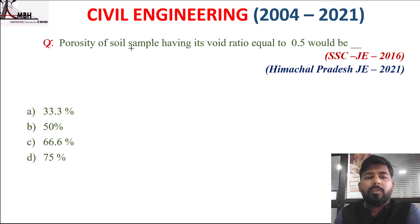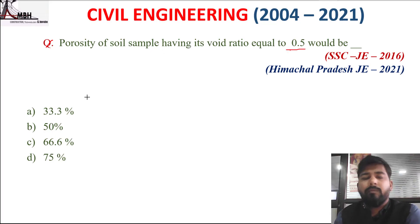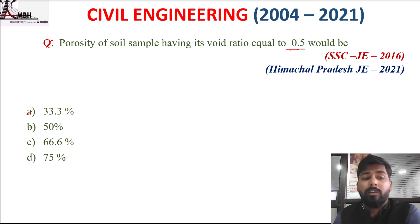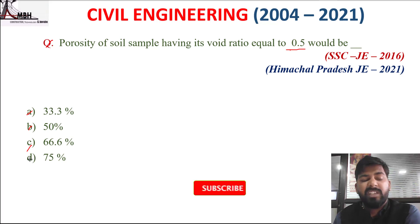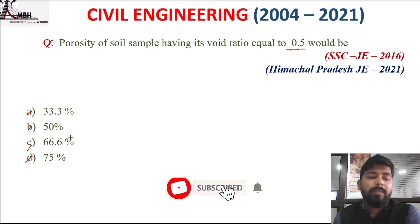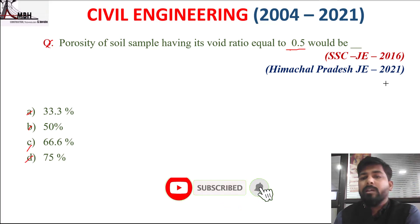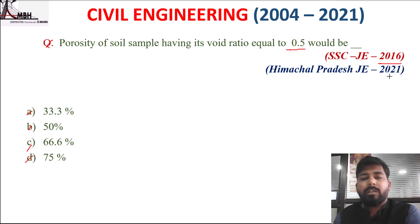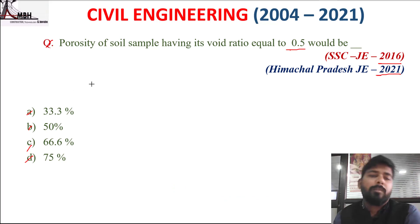Next question: the porosity of a soil sample having void ratio e = 0.5 would be: A 33.3%, B 50%, C 66.6%, D 75%.